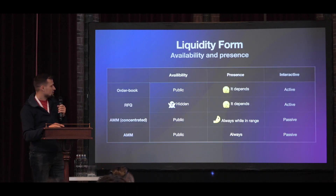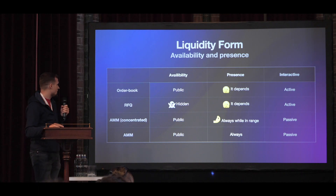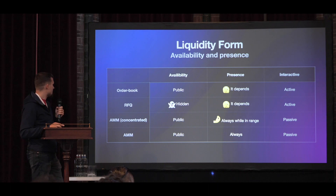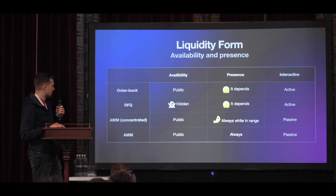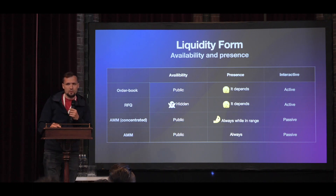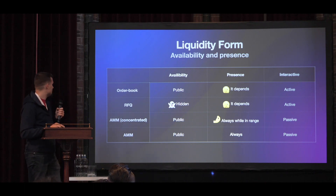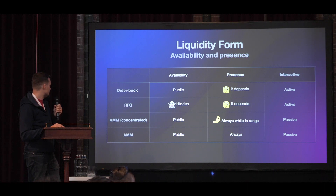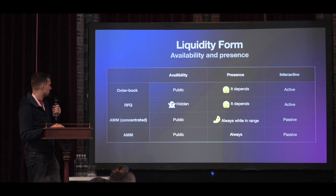If we compare forms of liquidity and how it's presented, there are a few types: order book, RFQ, concentrated AMM, and what I'd call infinite AMM. Concentrated AMM includes things like Curve and Uniswap v3, and AMM in general includes Uniswap, Bancor, and many other projects.